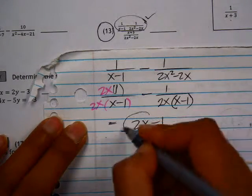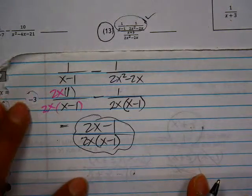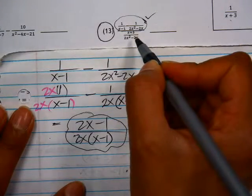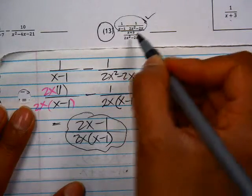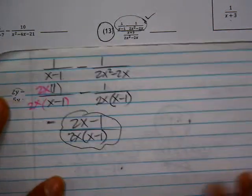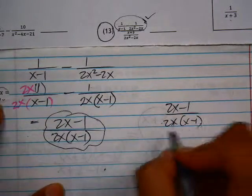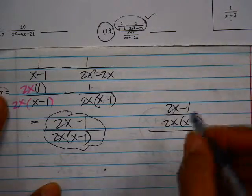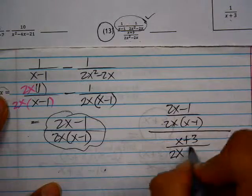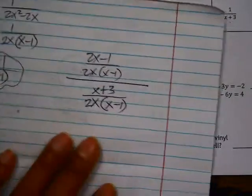So we'll hold on to this, and now let's look at this denominator: x plus 3 over 2x squared minus 2x. The only thing that can be done here is to factor the denominator. So let's look at what we got in the numerator: 2x minus 1 over 2x times x minus 1. I'm dividing by x plus 3 over, this can be factored, GCF of 2x, and then x minus 1. So I have this simpler division problem here.